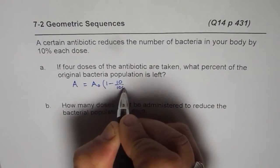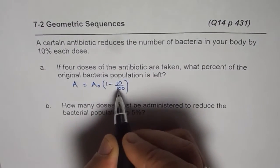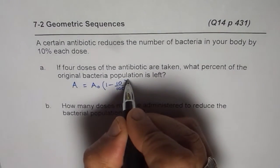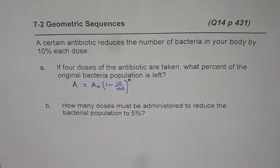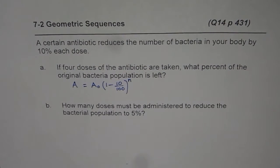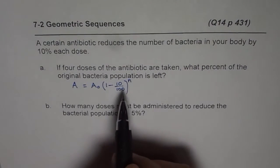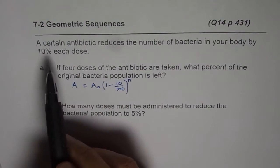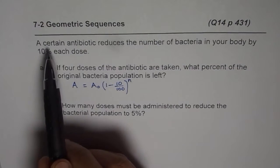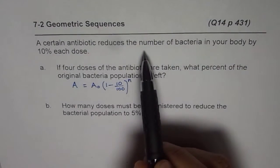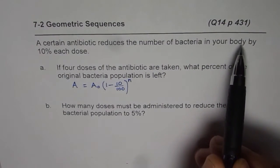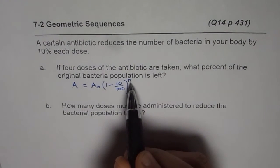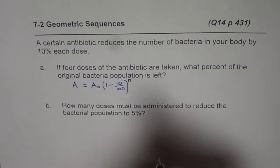So it is 1 minus 10%, which is 10 over 100, to the power of n, where n is the number of times the dose is given. When you write an equation, try to see whether it makes sense or not. Read it once again: a certain antibiotic reduces the number of bacteria in your body by 10% each dose.